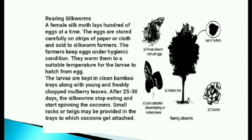Rearing silkworms: The female silk moth lays hundreds of eggs at a time. The eggs are stored carefully on strips of paper or cloth and sold to silkworm farmers. The farmers keep eggs under hygienic conditions and warm them to a suitable temperature for the larvae to hatch. The larvae are kept in clean bamboo trays along with young and freshly chopped mulberry leaves. After 25 to 30 days, the silkworms stop eating and start spinning their cocoons. Small racks or swings may be provided in the trays to which the cocoons get attached.